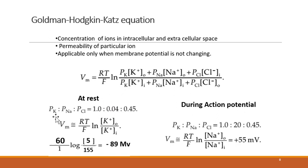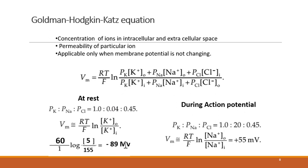At rest, if we compare permeabilities of potassium, sodium, and chloride, potassium permeability is very high compared to sodium and chloride. Combined with the fact that the equilibrium potential of potassium is equivalent to RMP, this explains that potassium is the major contributor responsible for the inside negativity of the membrane.